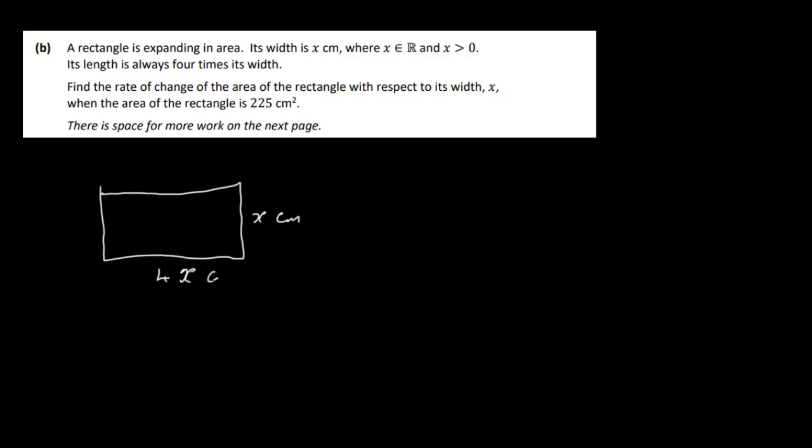The second part is where we have a rectangle that's expanding in area. Its width is x centimeters, where x is real and positive. Its length is always 4 times its width, so the width is x centimeters and the length is 4x centimeters. Its area is 4x times x, which is 4x squared centimeters squared.